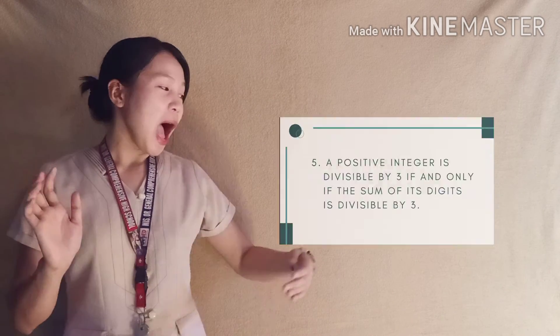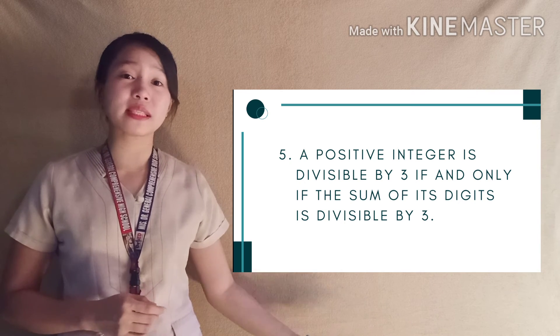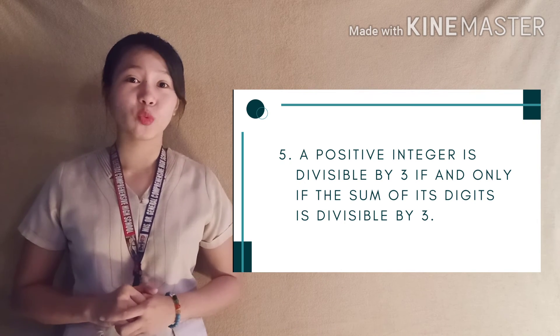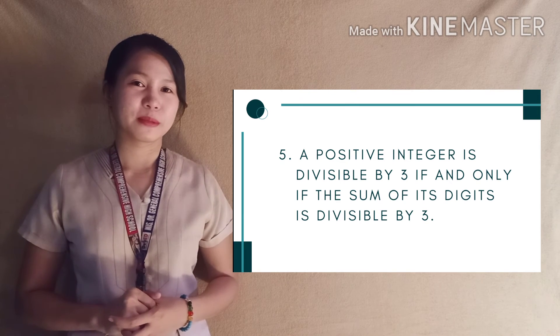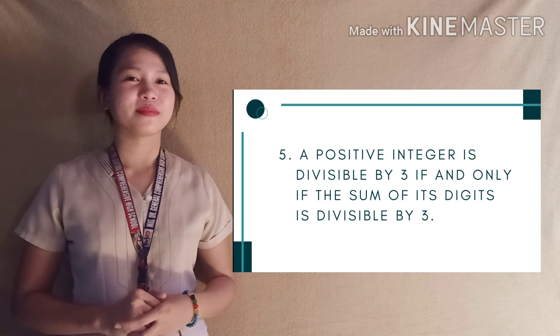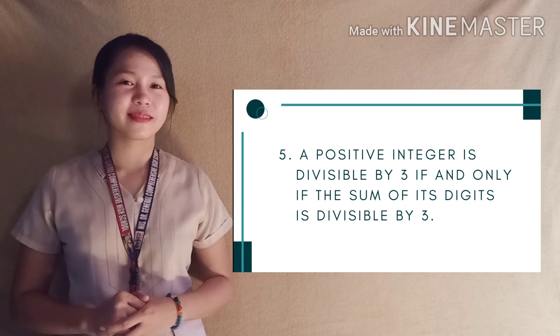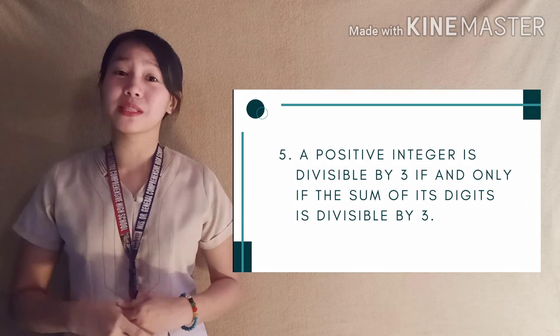And last but not the least, number 5: A positive integer is divisible by three if and only if the sum of its digits is divisible by three. What type of proposition is this? You're right — it's a compound proposition and it is a biconditional.